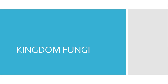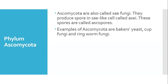The first phylum is Ascomycota. Organisms in this phylum produce spores in a sac-like cell body. These spores are called ascospores. Examples of Ascomycota include cup fungi and ringworm fungi. These are just a few of the examples of organisms that are found in this phylum.